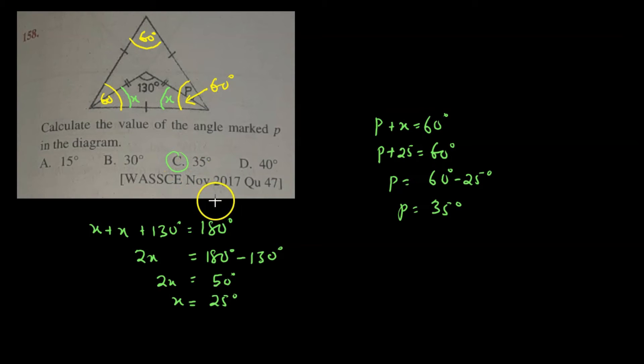Let's move on to the next example. This example came in the year 2018 and was question number 17. There is a diagram in which POT is a straight line, and we can observe some adjacent angles meeting at point O. Now, WXY equals 140 degrees and X plus Y plus Z equals 130 degrees. Find the value of X plus Y.